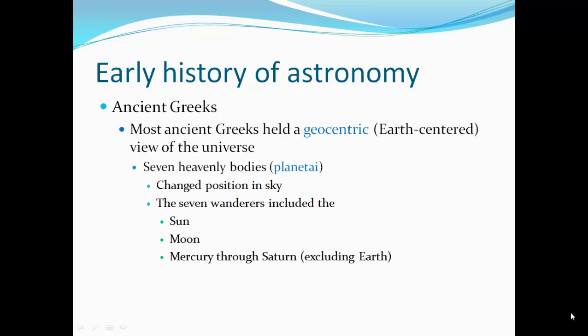Then there were also seven heavenly bodies, the wanderers, who changed position in the sky. These seven wanderers included the Sun, the Moon, Mercury through Saturn, excluding the Earth.